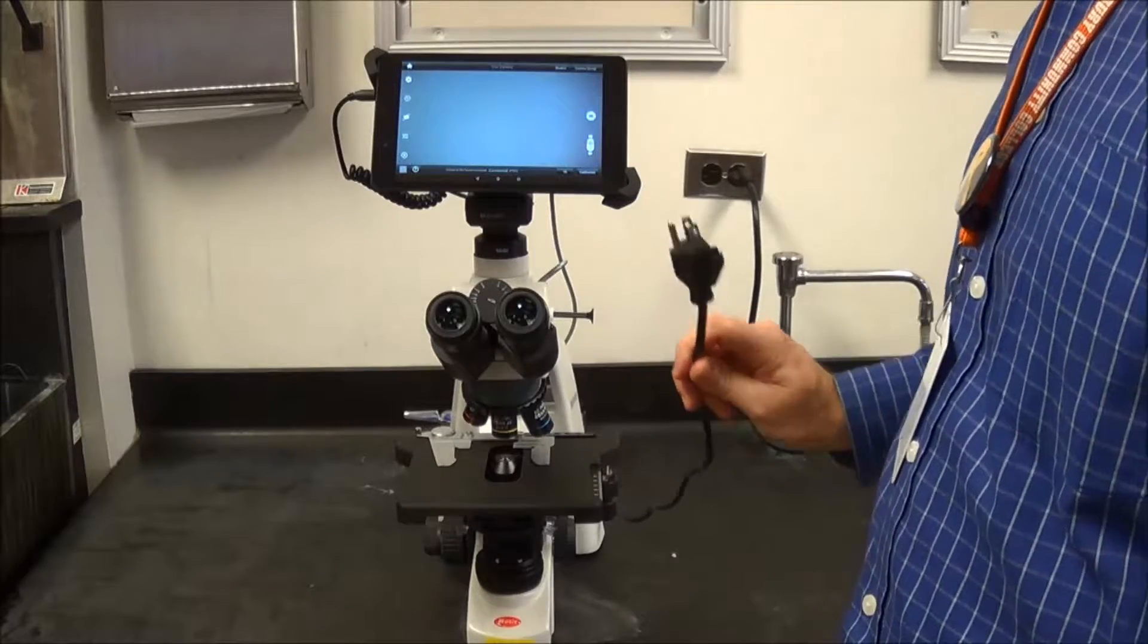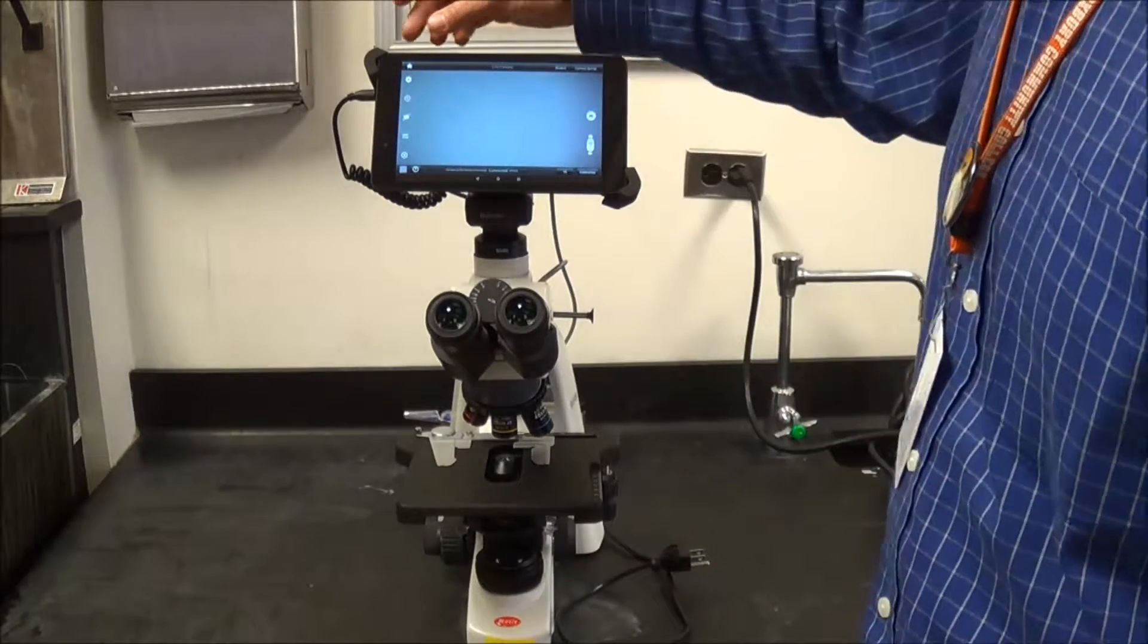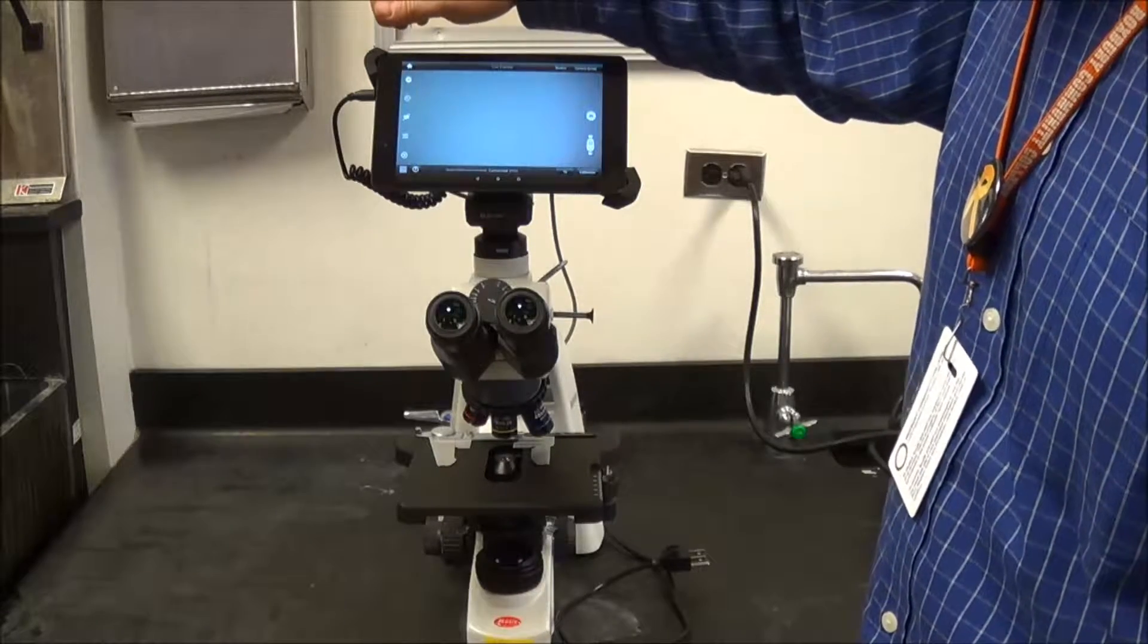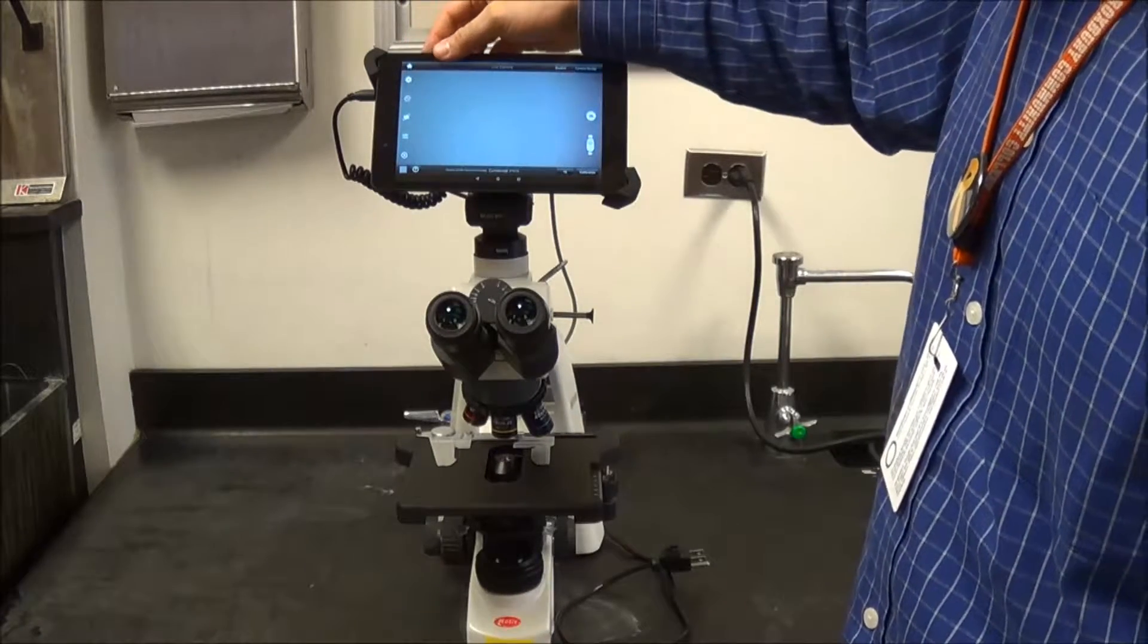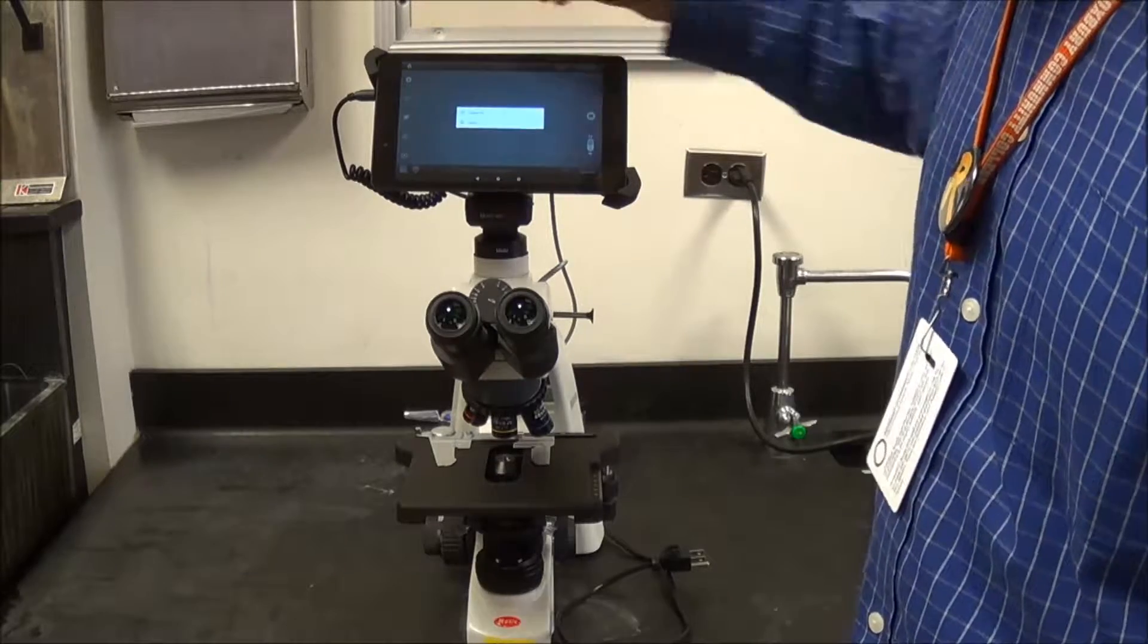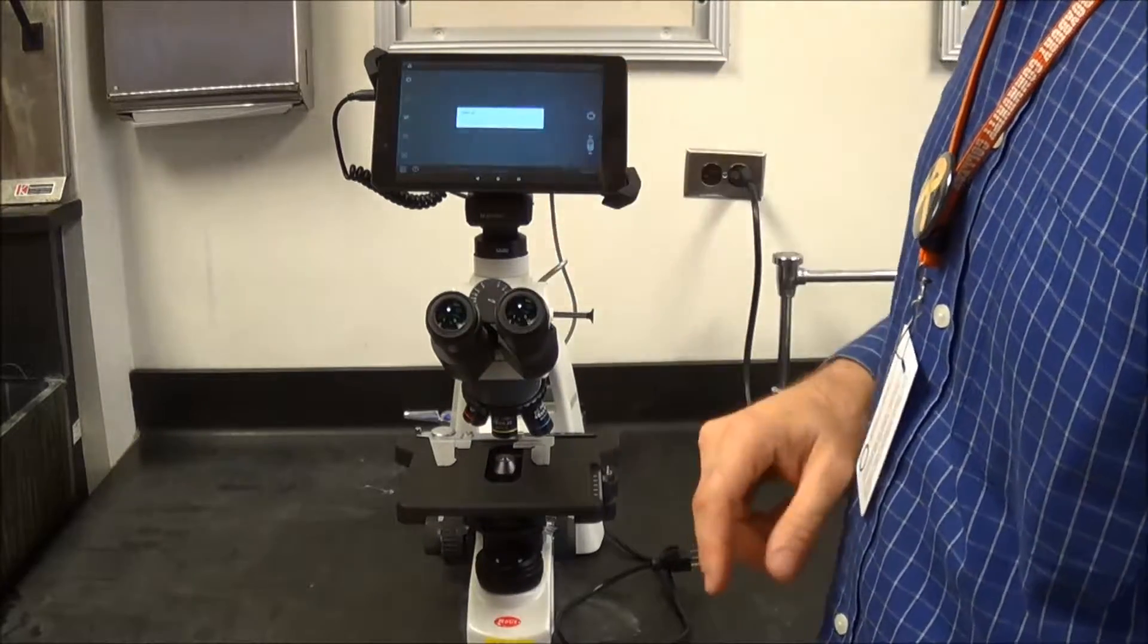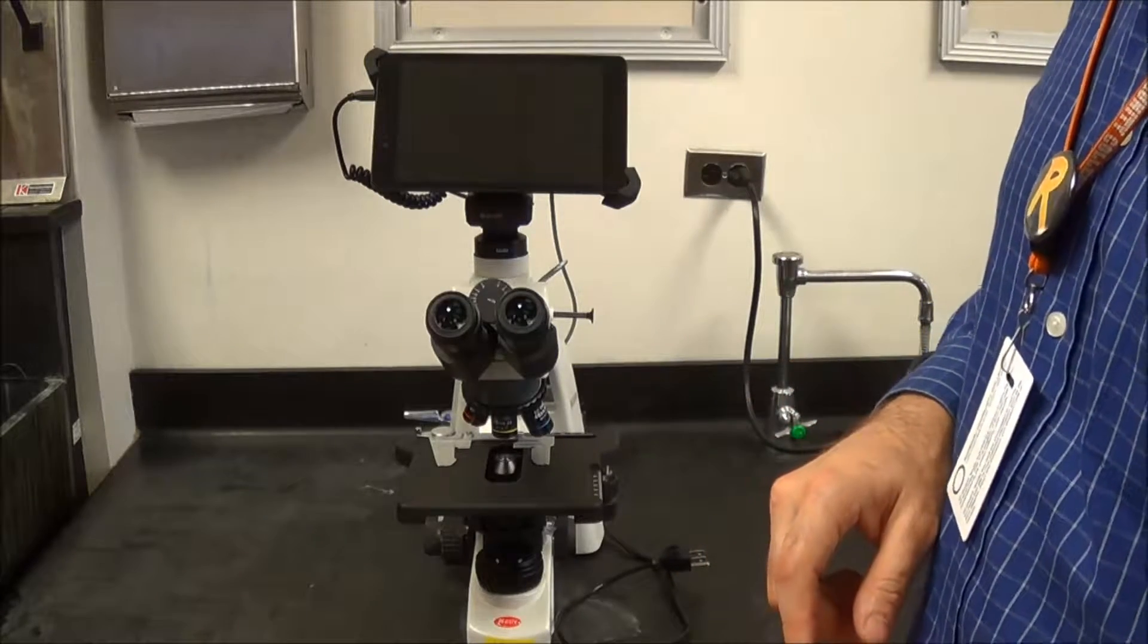We want to unplug it and then hold down that power button again. Remember, it's the button most to the left in the upper corner. As you hold that down, you get the option to power off or reboot. So you want to press power off and turn it off.